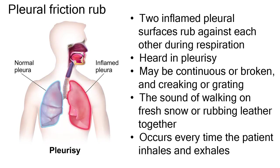Pleural rubs occur when two inflamed pleural surfaces rub against each other during respiration. This is often heard in pleurisy, or inflammation of the tissues that line the lungs and chest cavity. The sound may be continuous or broken, and creaking or grating. It can be described as the sound of walking on fresh snow or rubbing leather together.